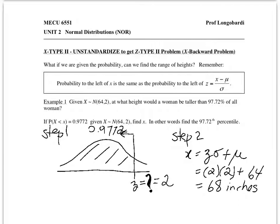And that is a backward problem where first I use the Z score table to get the number of standard deviations from the mean and then I unstandardize.